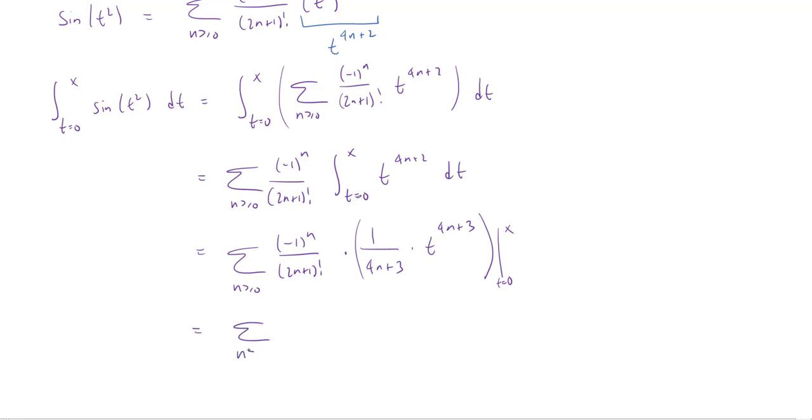So let's put this all together now. I get a series. On top, I'm going to have an alternator. On the bottom, I'll have 2n plus 1 factorial times 4n plus 3. And then I'll have x raised to the 4n plus 3 power. And there we go. We've computed the integral of sine of t squared from 0 to x. That is, we have computed the Fresnel integral and written it in terms of a power series.